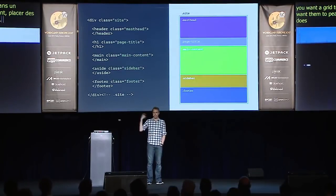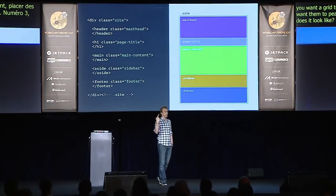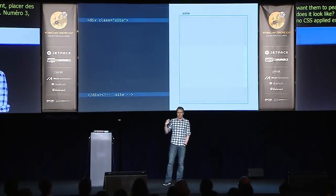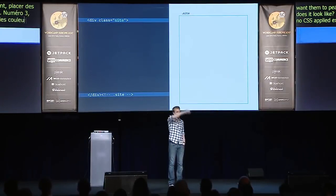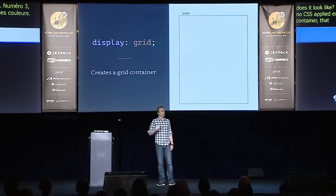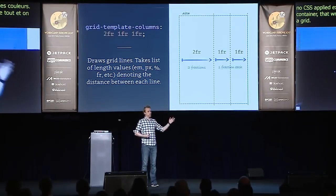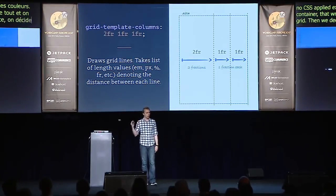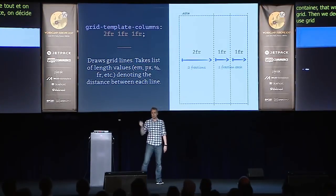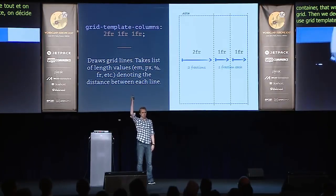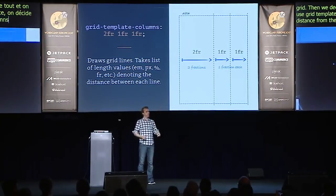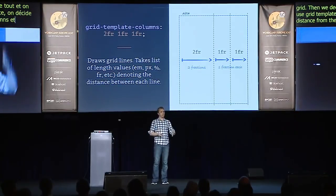What does it look like? Here's my example. This is the semantic markup with no CSS applied, except for color. We start by grabbing just the site container — that's the container that wraps everything — and we declare display: grid. Then we decide how many columns and how many rows we want, using grid-template-columns and grid-template-rows. You declare the width between each of the lines, and then another line is drawn.